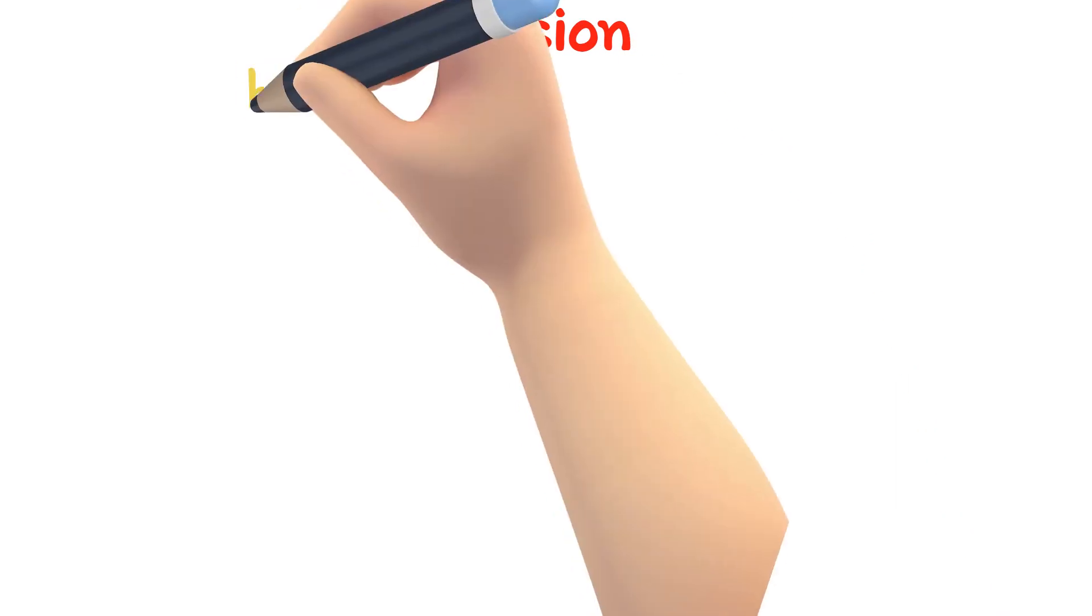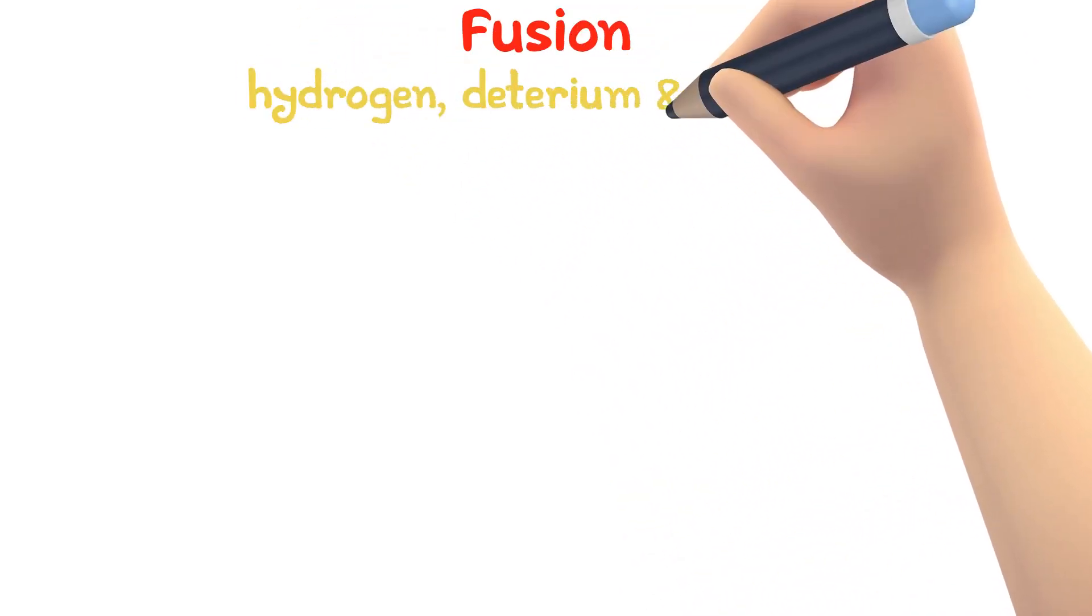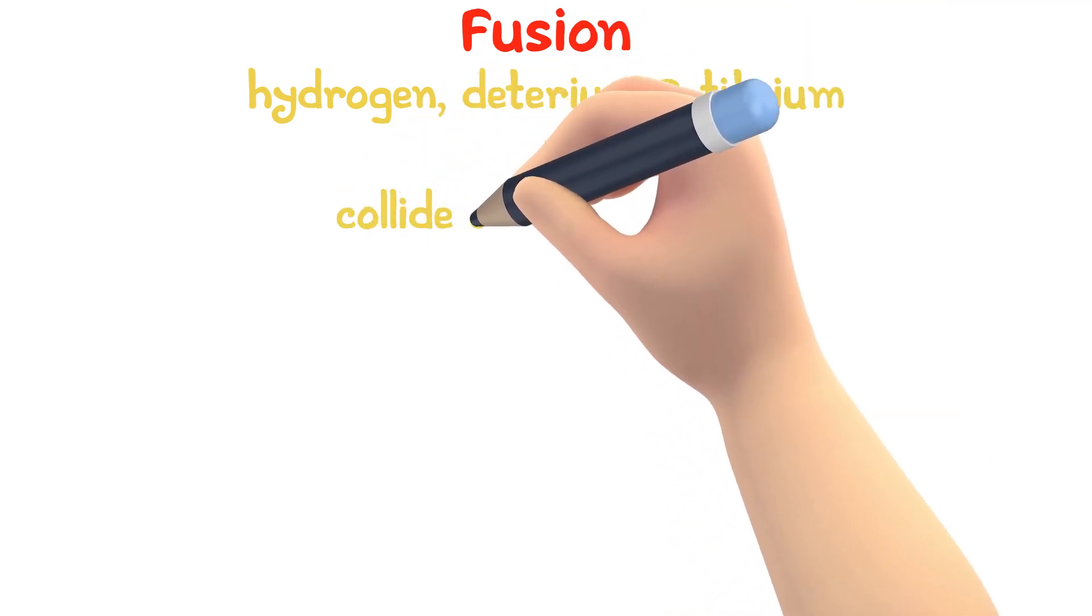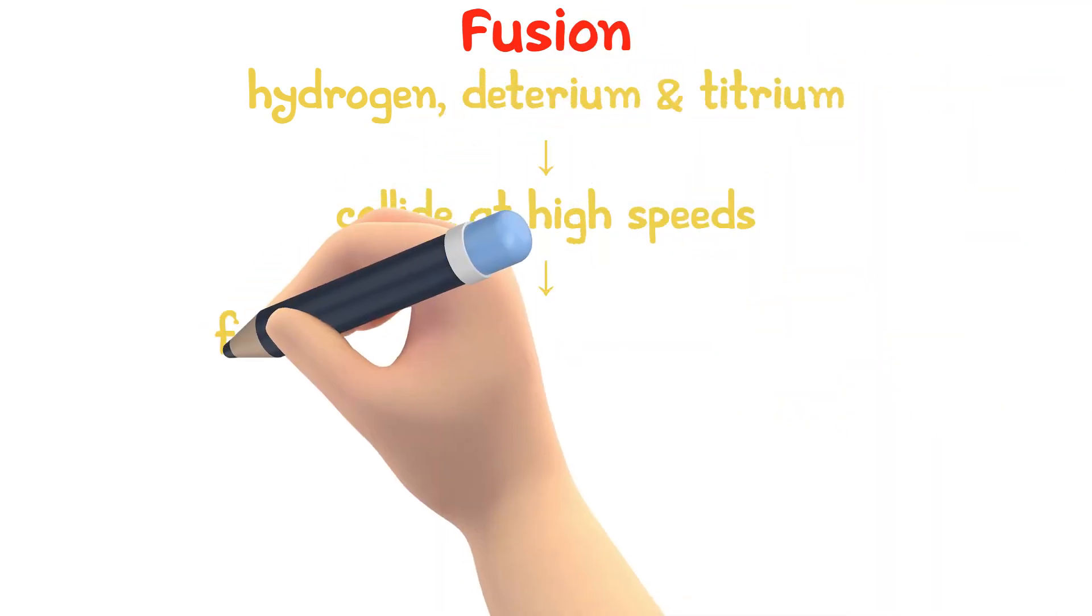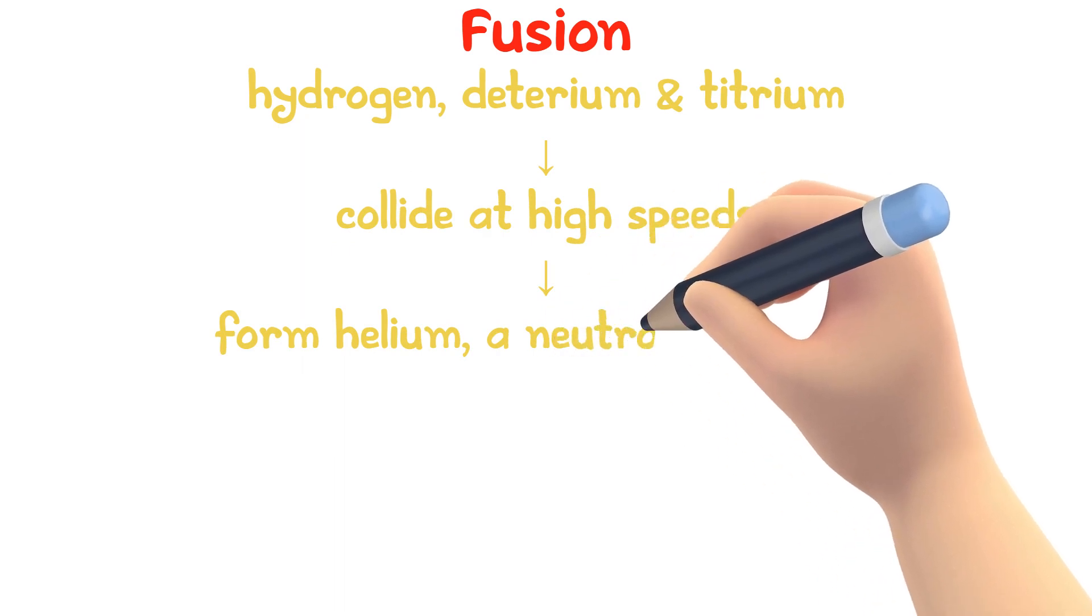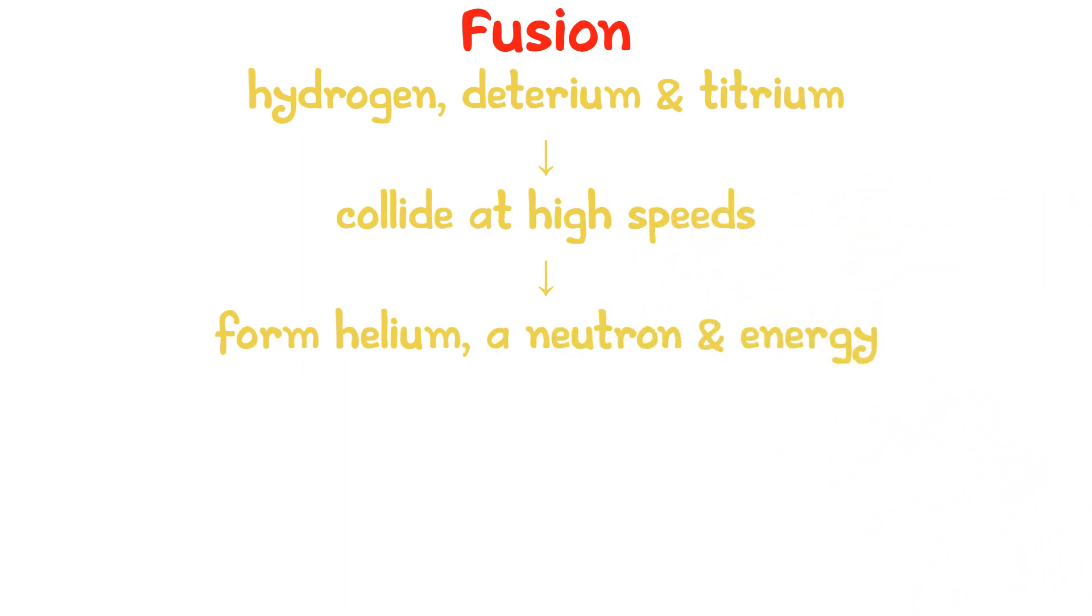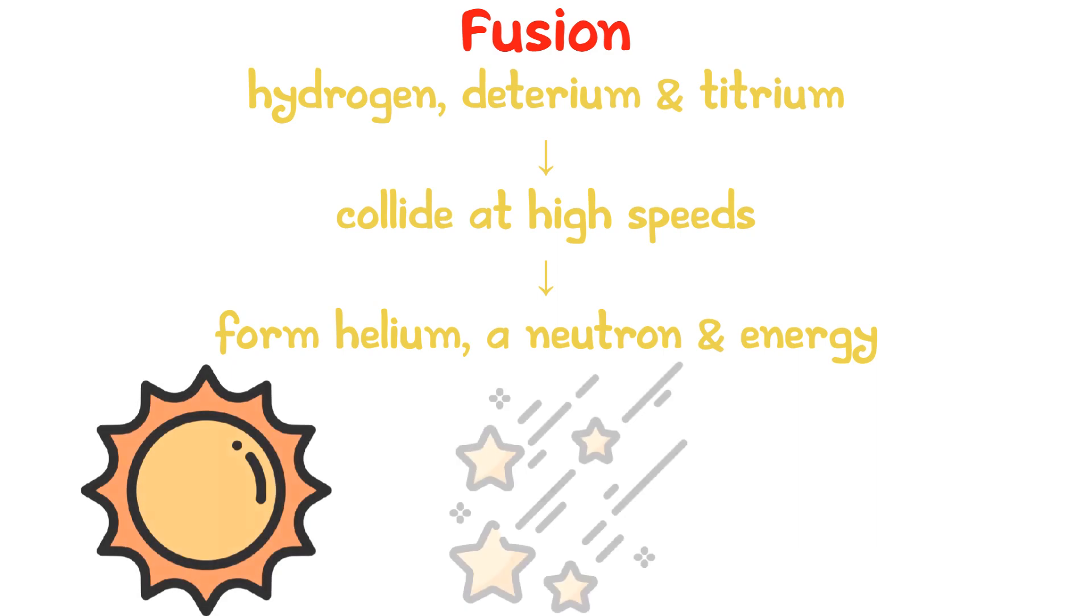An example of the fusion process is when hydrogen and deuterium collide at high speed to form a helium nucleus, a neutron, and large amounts of energy. This fusion process is the energy source for the sun and stars.